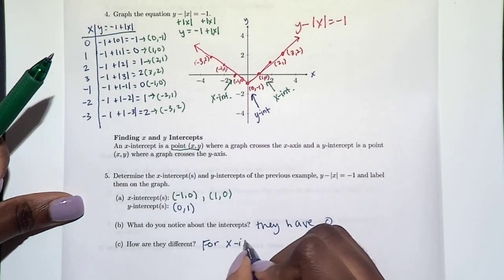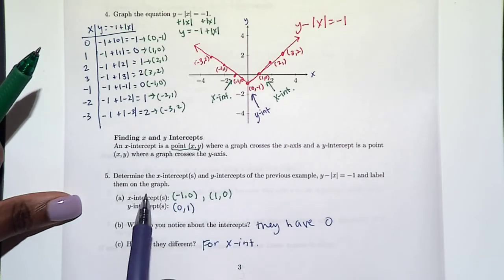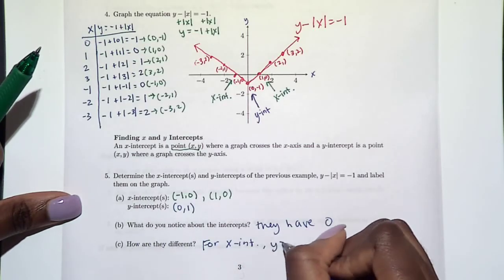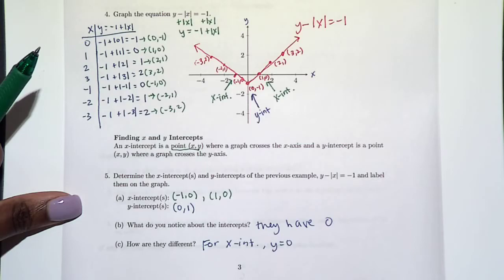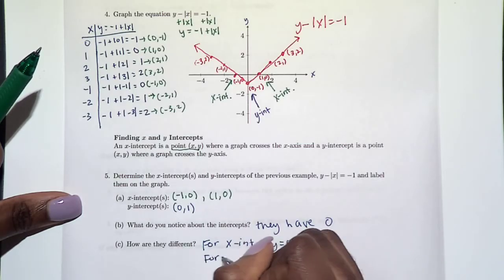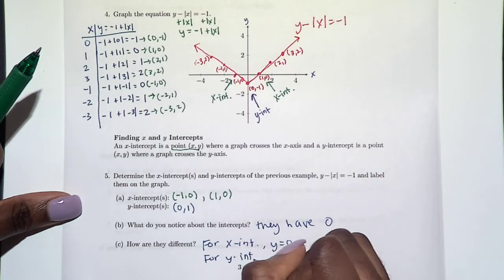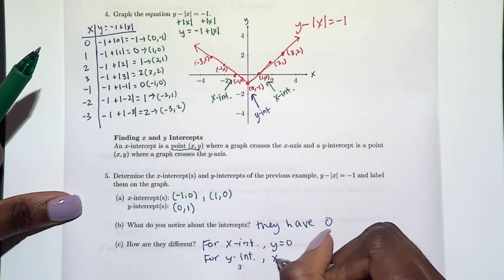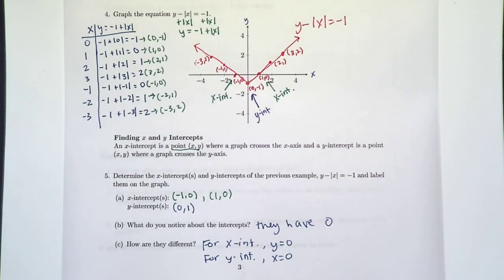So for x-intercepts, which is a point, the y part is zero. And for y-intercepts, again a point, the x part is zero. This is the main thing you need to take away from this: x-intercepts, y is zero; y-intercepts, x is zero. And if you need to think about it on a graph, you can look at that as well and create one.